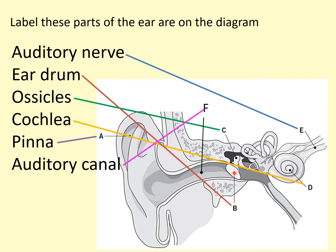The eardrum vibrates when sound waves come down the auditory canal, and the eardrum passes the vibrations onto the ossicles — the smallest bones in your body. In fact, the very smallest one is called the stirrup. You don't need to know the names of the individual bones, just that they're called ossicles.